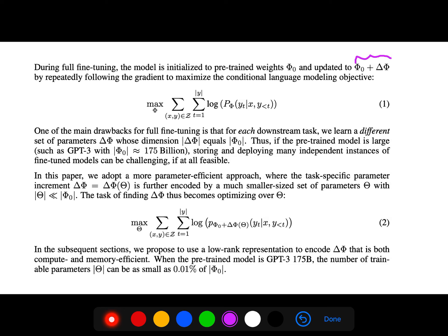One of the main drawbacks for full fine-tuning is that for each downstream task, we learn a different set of parameters. Thus, if the pre-trained model is large, for example GPT-3, storing and deploying many independent instances of fine-tuned models can be challenging, if at all feasible.